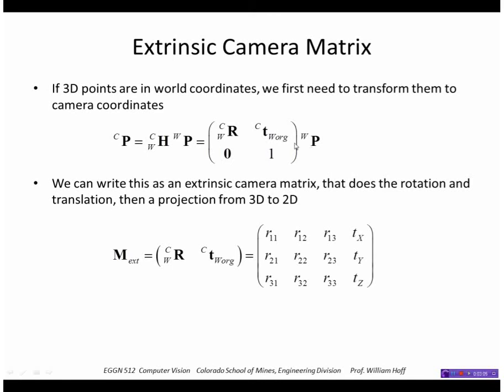If we simply got rid of this fourth row in that 4 by 4 matrix, we'd get a 3 by 4 matrix. And it would look like this with a 3 by 3 rotation matrix here and a 3 by 1 translation here.